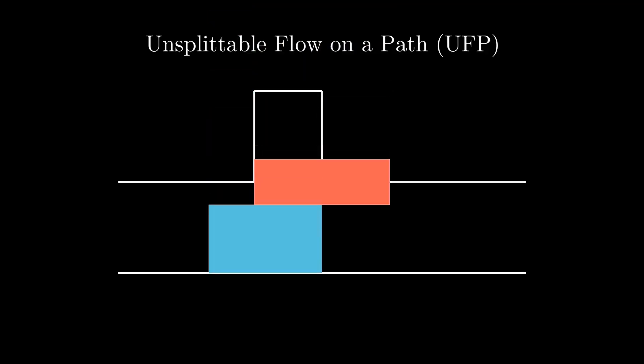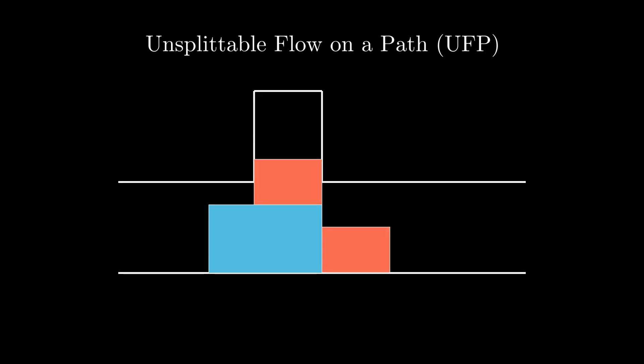We can see the storage allocation problem, or SAP for short, as a combination of two well-studied problems. The first problem is called unsplitted flow in a path, UFP. The second problem is called the two-dimensional geometric knapsack problem. The definition of UFP is very similar to SAP. The difference is that the tasks do not have to be depicted as rectangles but can be pushed all the way to the bottom — we can imagine a resource like electrical power or water. In the two-dimensional geometric knapsack problem, we have rectangles just like in SAP, but instead of moving tasks only up and down, we may also move them to the left or to the right.